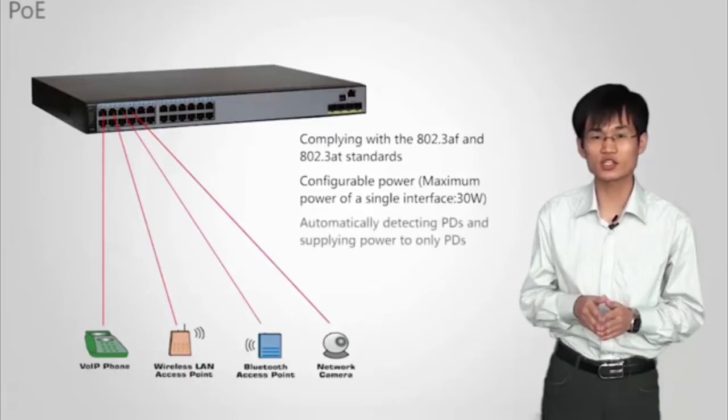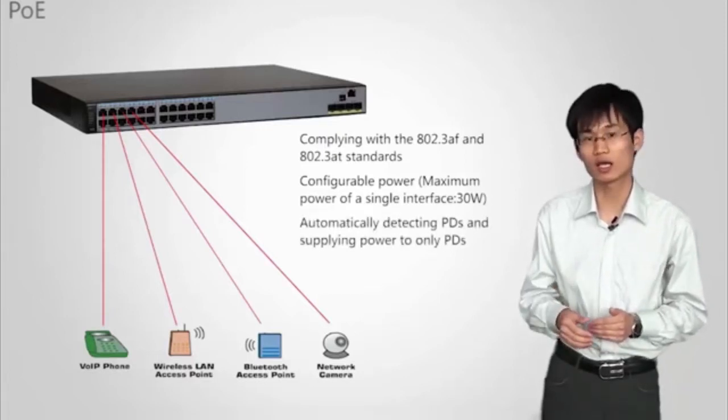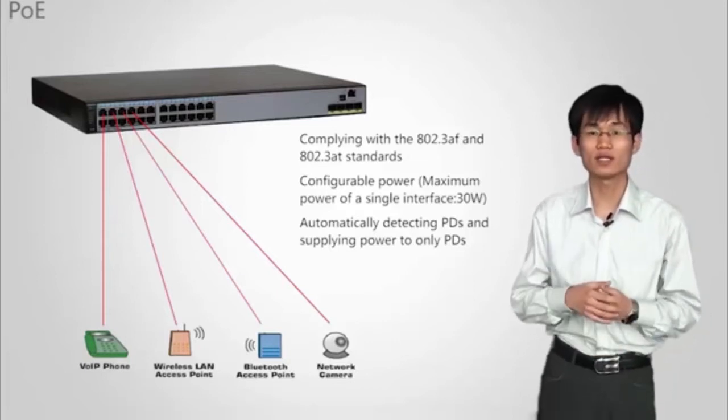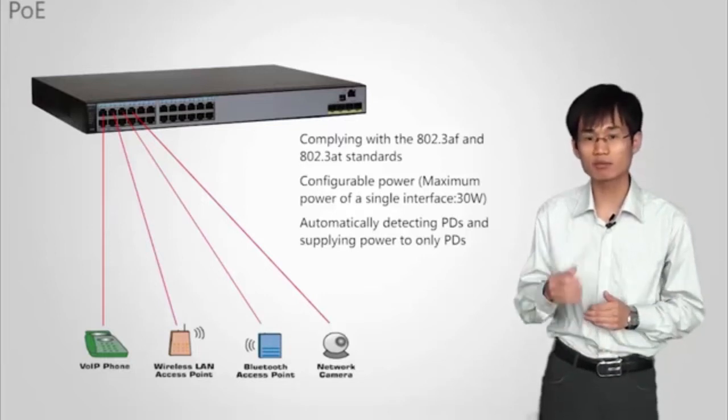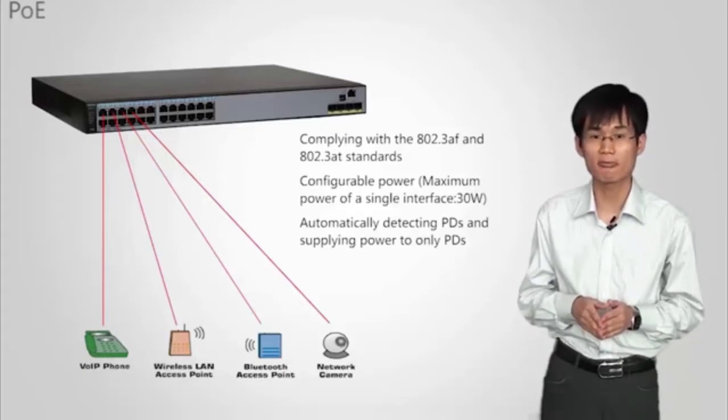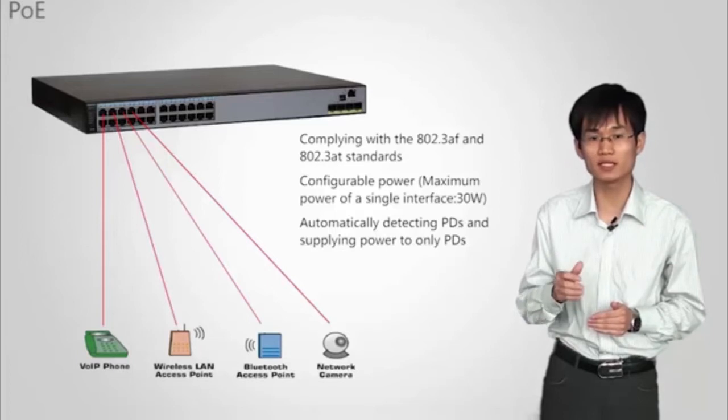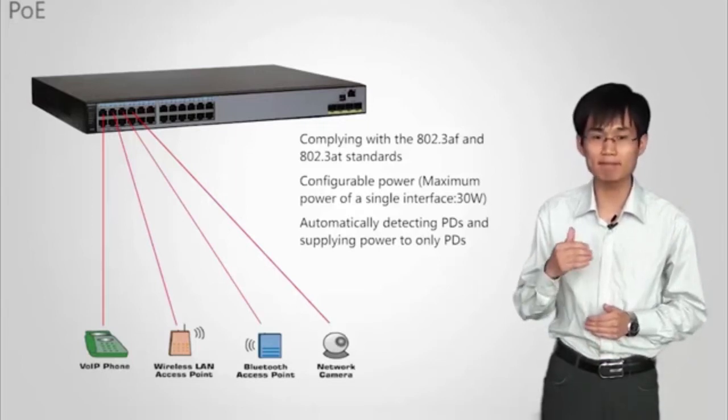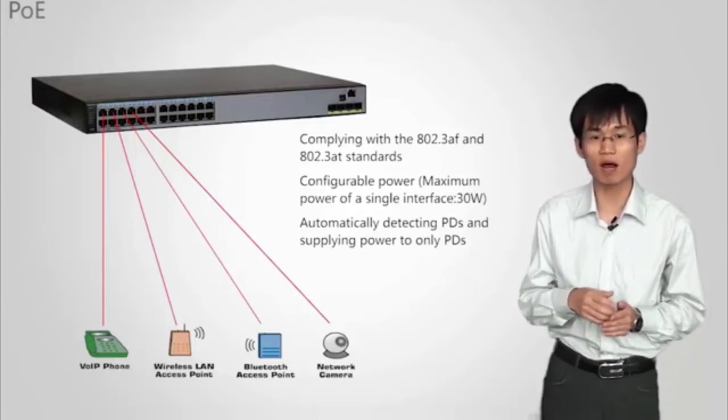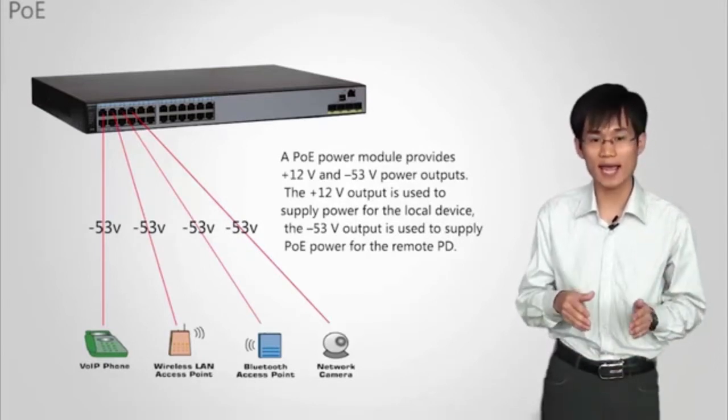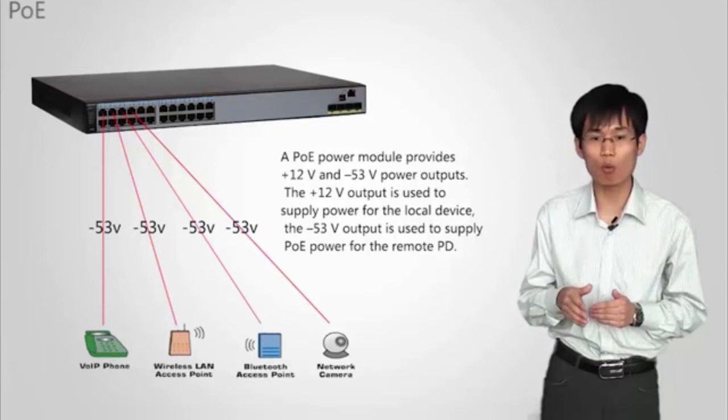The PWR-series switches support Intelligent Power Management and allow priority configuration for interfaces. When the total power consumption of all PDs exceeds the total power supported by the PSE, the PSE supplies power for the PD with a higher interface priority. If the interfaces have the same priority, the PSE supplies power first for the interface with a smaller interface number.